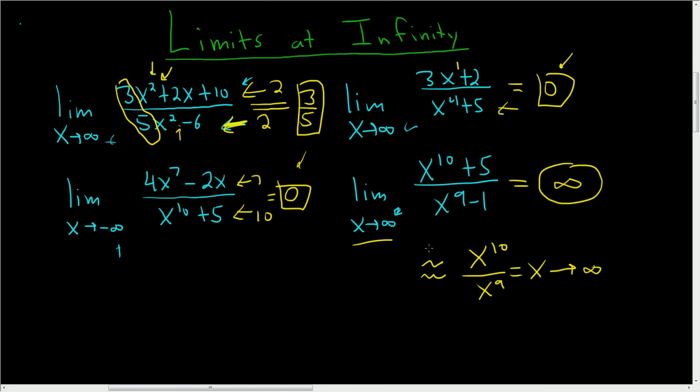So just a really quick video to show you how to compute some limits at infinity without showing any work. Again, if the degrees are the same, you get 3 over 5. If it's bigger on the bottom, you get 0. And if it's bigger up top, just ignore the numbers and look at these highest degree terms. Divide them, you get x. As x approaches infinity, you get infinity.